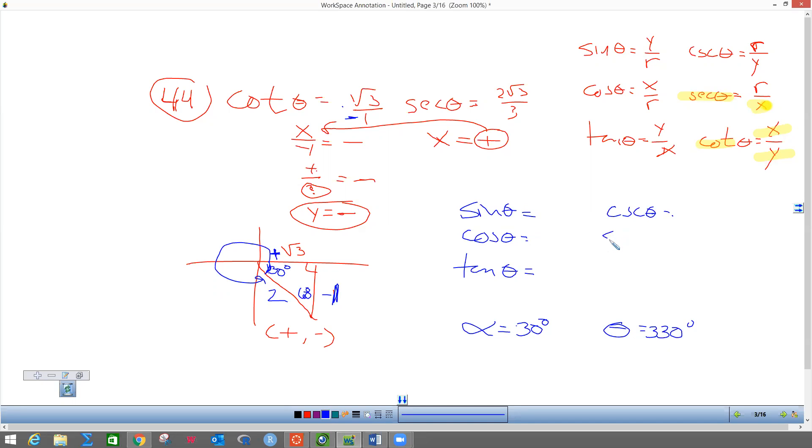These are the ones that students make a mistake on—they don't write down the given stuff right away. Hopefully you're going to write down what they gave you. So this is negative radical 3. Secant, this one is 2 radical 3 over 3.